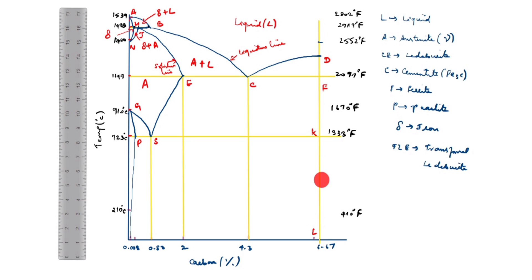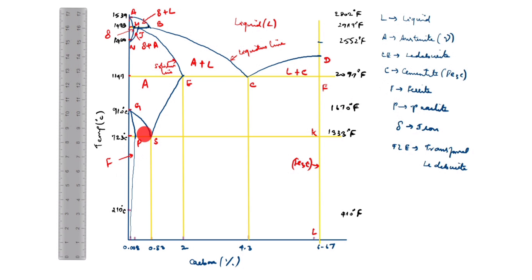This line is the cementite line, or Fe3C line — cementite and Fe3C are the same. This is the cementite line; here is L, so what comes is L plus C (liquid plus cementite). This is austenite (A). This is ferrite — ferrite short form is F. So here is A and here is F, making this region austenite plus ferrite (A + F).